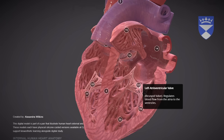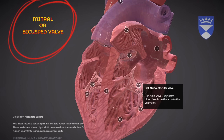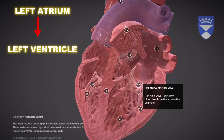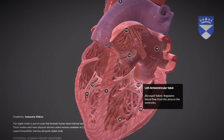17. Left Atrial Ventricular Valve (Mitral/Bicuspid Valve): A two-flap valve that controls blood flow from the left atrium to the left ventricle, ensuring one-way movement and preventing backflow.